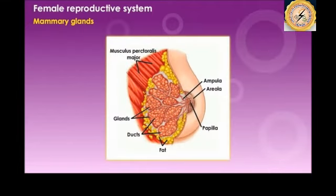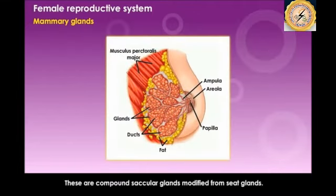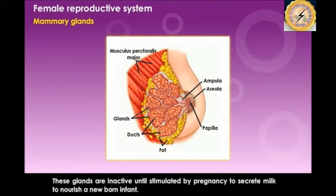The mammary glands are compound sac-like structures modified from the sweat glands. These glands are inactive until stimulated by pregnancy to secrete milk to nourish a newborn infant.